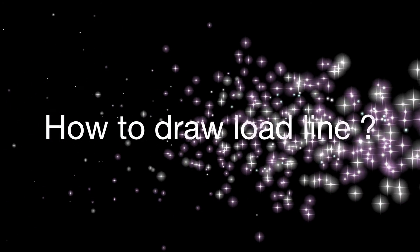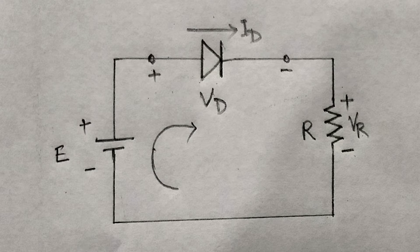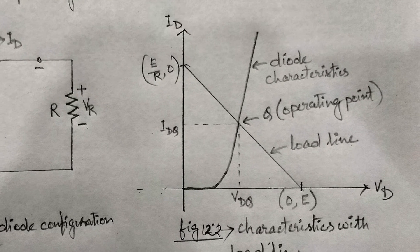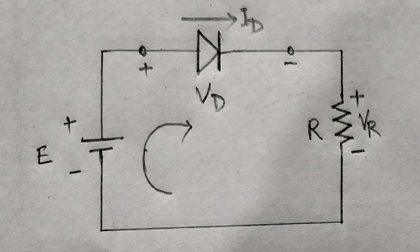Now, let us learn how to draw a load line. We will consider the network as shown in figure 12.1, having characteristics as shown in figure 12.2. A practical diode is a non-linear electronic circuit because it has a non-linear VI characteristic, that is, the circuit does not follow Ohm's law.